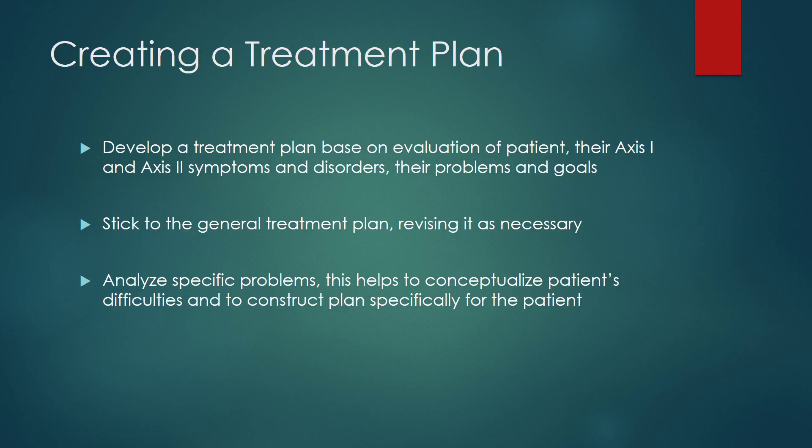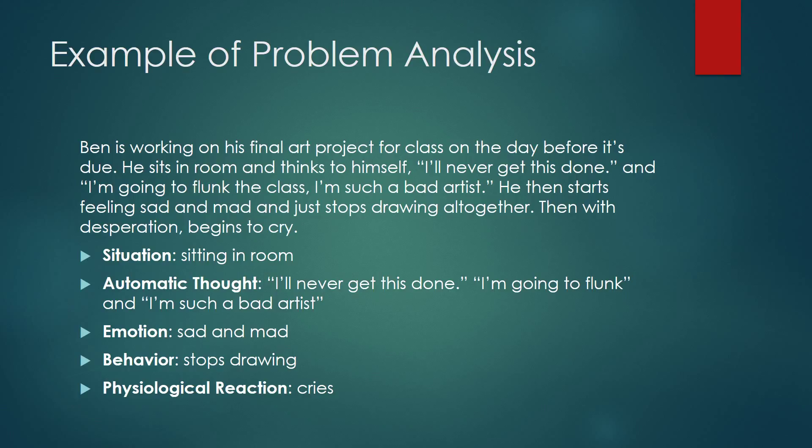This is where the therapist begins to create a treatment plan. First, they develop a treatment plan based on the evaluation of the patient — their Axis I and Axis II, their symptoms and disorders, and their problems and goals. The therapist should stick to the general treatment plan, revising it as necessary throughout the therapy sessions. They also analyze the specific problems the patient may have, which helps conceptualize the patient's difficulties and construct a plan specifically for the patient.